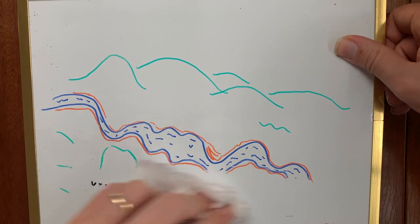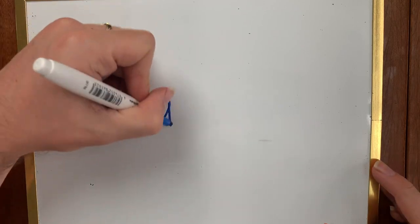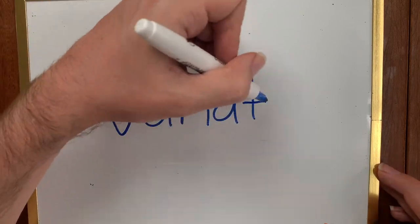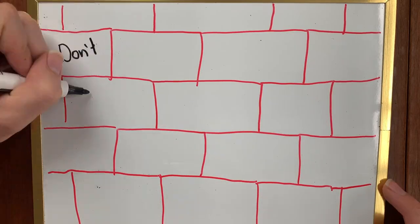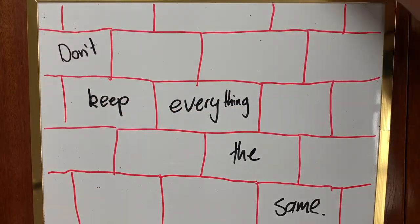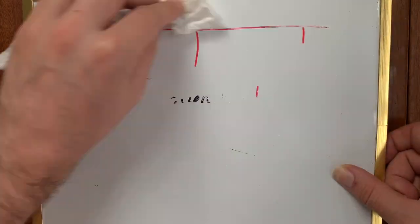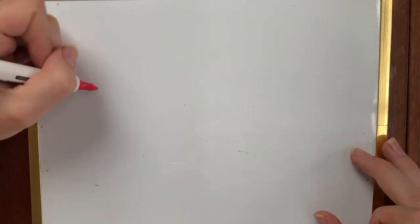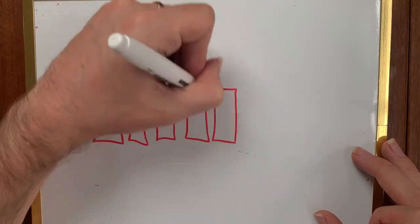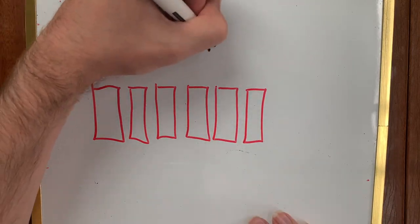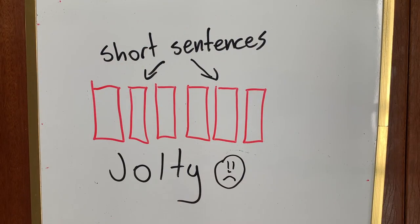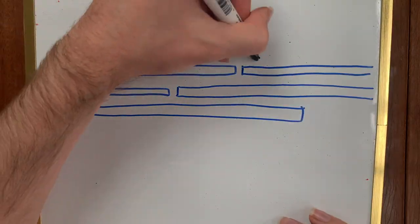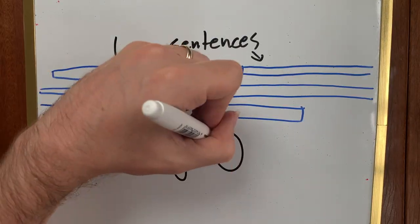One of the easiest ways we can add fluency to our sentences is variation. When it comes to your sentences, you don't want to keep everything the same. When sentences are all the same length, we start running into fluency problems. If they're all really short, the writing is jolty. If they're all really long, the writing is tiring.